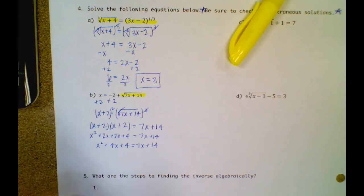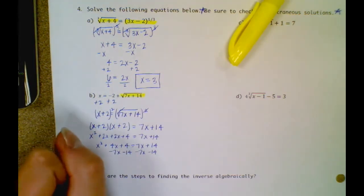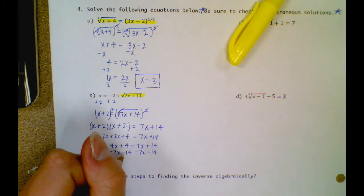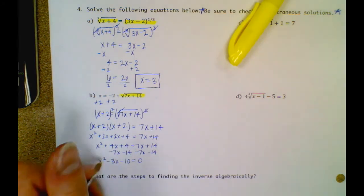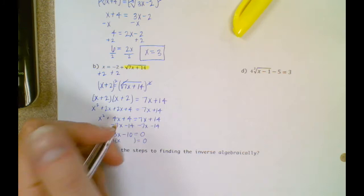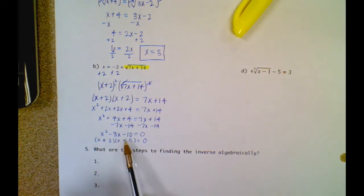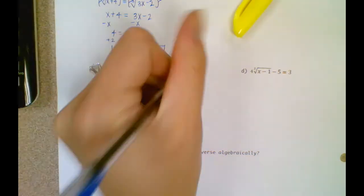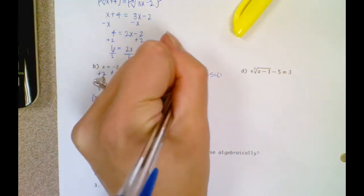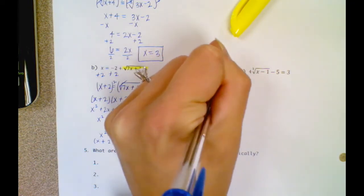I have a quadratic, so I need to set this equal to zero. I'm going to subtract 7x minus 14. I get x squared minus 3x minus 10 equals 0. Now we can factor that. Negative 5 and positive 2: negative 5 times 2 gives negative 10, and negative 5 plus 2 is negative 3. Then set both factors equal to zero and solve for x: x equals negative 2 and x equals 5.